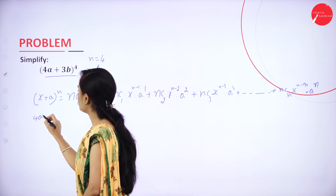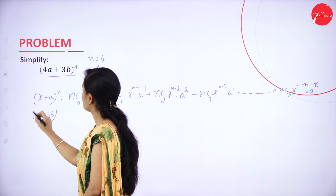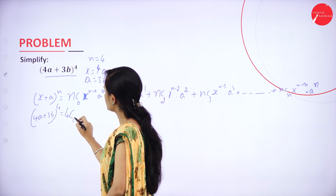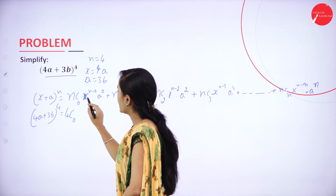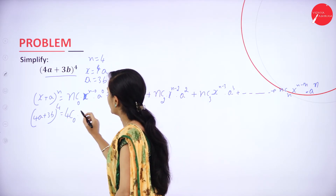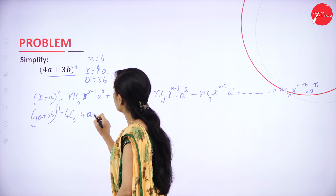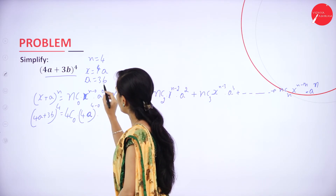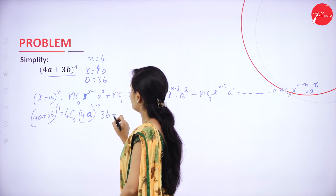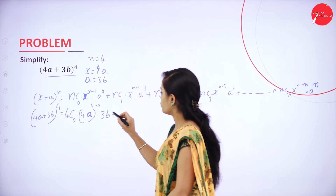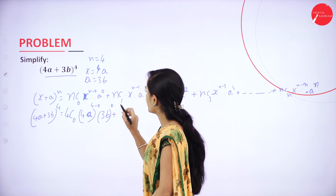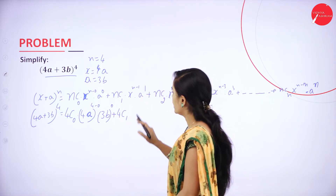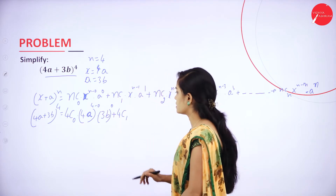Now I will substitute the values for 4a plus 3b power 4. n value is 4: 4c0 into x value 4a power 4 minus 0 into a value 3b power 0, and again 4c1 — please write it carefully. If you are missing even 1 term, you will not get the answer.